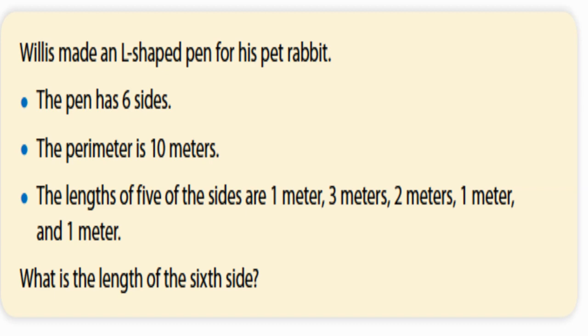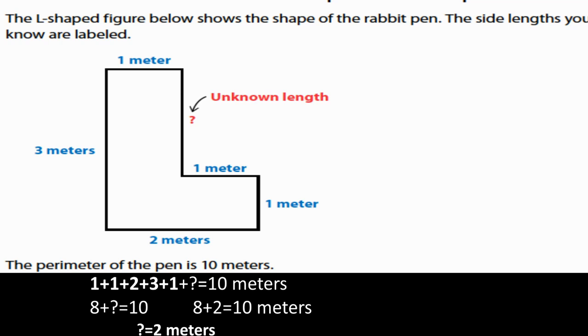But now let's take a look at one more example. Willis got a pet rabbit. And he decides to make an L-shaped pen for his rabbit. Now the pen that he builds, which is like a cage, has six sides. And the perimeter of the entire pen is 10 meters. Well, five of those sides measure one meter, three meters, two meters, one meter, and one meter. So what is the length of the sixth side? Well, go ahead and draw this picture out and label what I know. And I've got the sides of one, one, two, three, and one. So all of those sides plus the unknown side will equal 10 meters. So if I add those up, one plus one is two, two plus two is four, four plus three is seven, and seven plus one is eight. So eight plus what equals 10? Well, I know that eight plus two equals 10. So that unknown side is two meters.